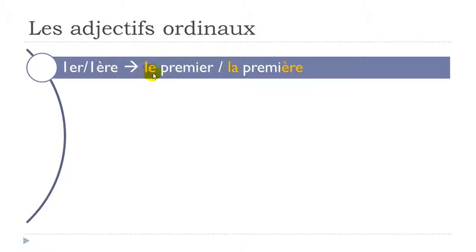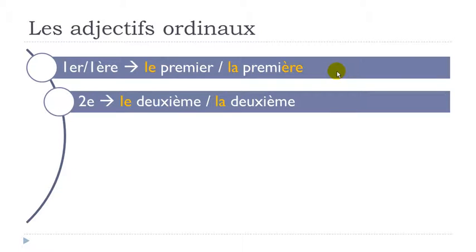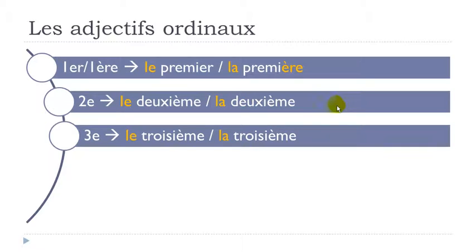So we'll pronounce them: le premier, la première. The first: le premier, la première. Then, le deuxième, la deuxième. In that case it's only the le and la that will be different because deuxième is the same for both forms.